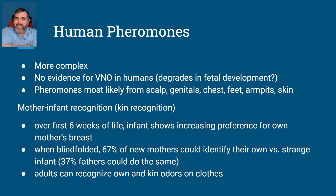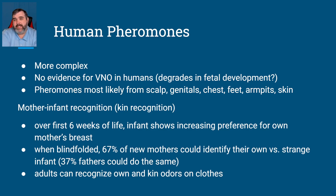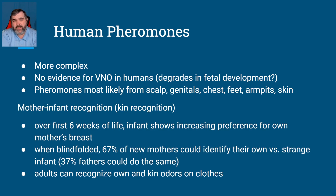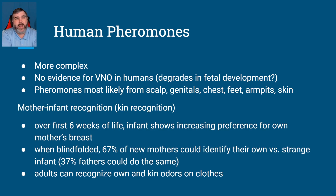Humans have the VNO to some extent, but not really like other animals. Human pheromones are much more complex, and there's not a lot of evidence for a functional VNO in humans — it's thought to degrade quickly during fetal development. We're most likely to see pheromones from the scalp, genitals, feet, and armpits — areas where we sweat. That's part of why we wear deodorant.